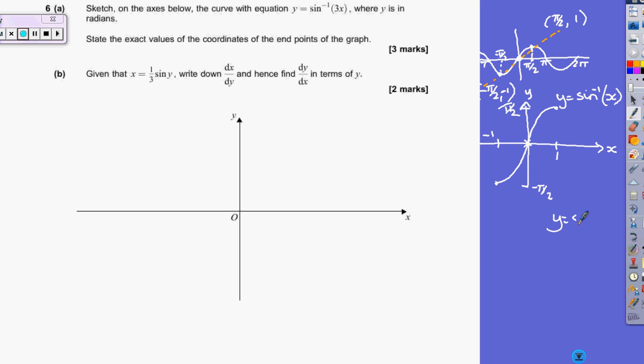But we're actually looking for y equals sine to the minus 1 of 3x. So, by looking at this point here, there's definitely been a transformation. It is a stretch, a scale factor of a third, parallel to the x-axis. So this means that the x values are going to change by a third. So that's minus 1 over 3. So the graph we're looking to draw is actually this type of graph.